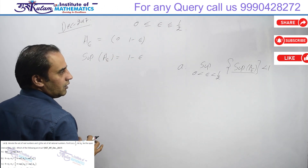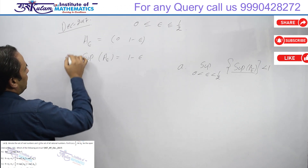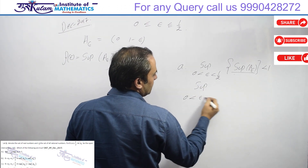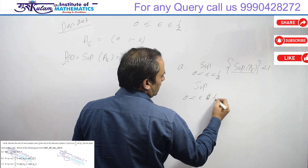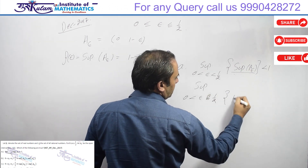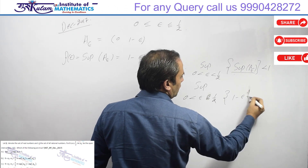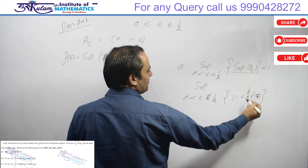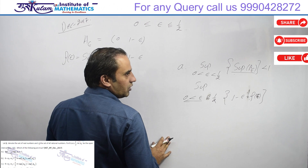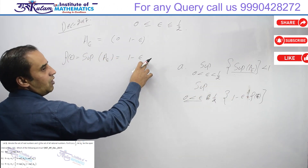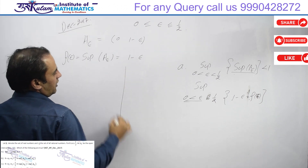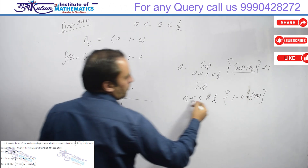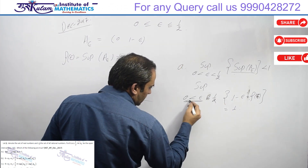This is basically a function of epsilon. So the supremum value over 0 < epsilon < 1/2 of the quantity (1 - epsilon), which is f(epsilon). Now 1 - epsilon is a decreasing function of epsilon. If we draw the graph, at epsilon = 0 the value is 1, and at epsilon = 1/2 the value is 1/2. So the supremum value is definitely 1.